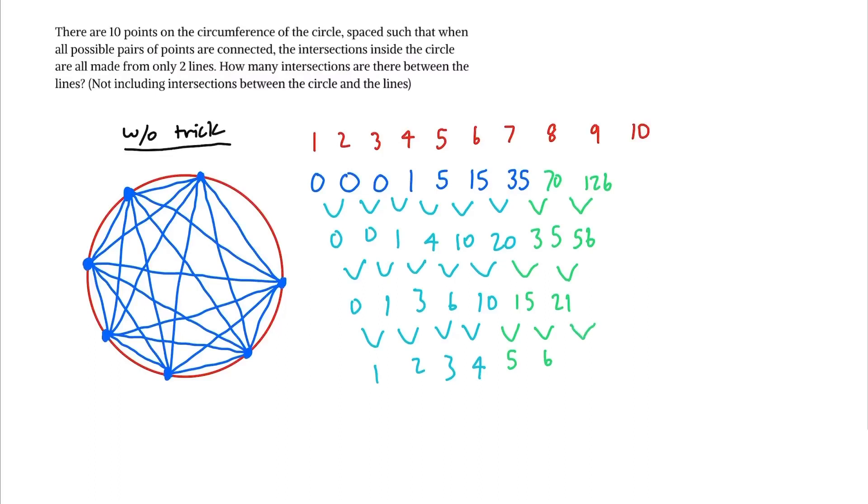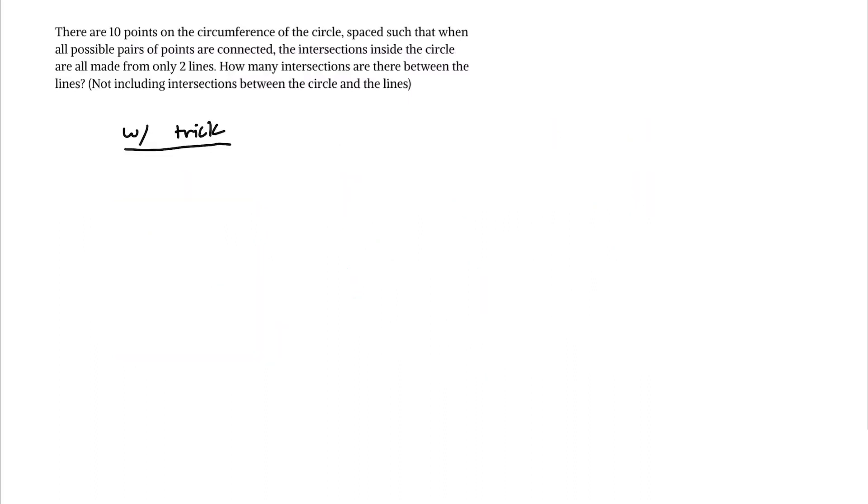And then our last one to figure out the number of intersections with 10 points: we'd add 7 to get 28, 28 plus 56 is 84, and 84 plus 126 is 210. Now here's the solution with the trick.